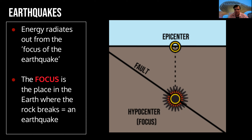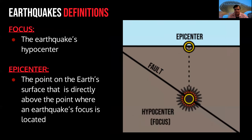If we project the focus as a line to the surface of the Earth, we will have what is called the epicenter. The epicenter corresponds to the surface location above the focus. We have some definitions here.